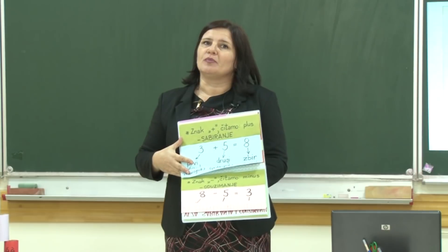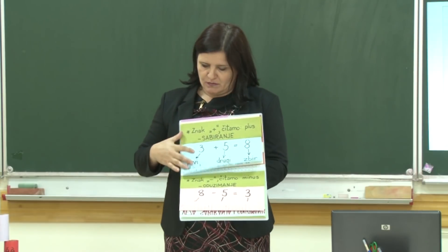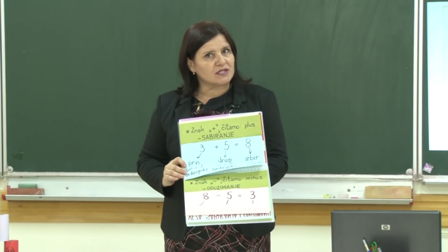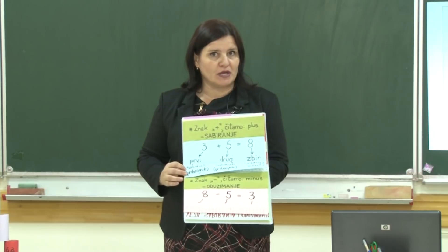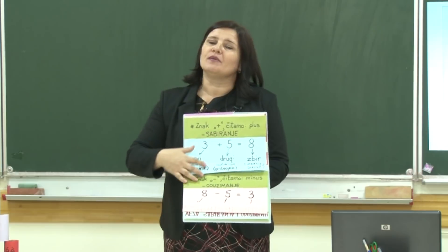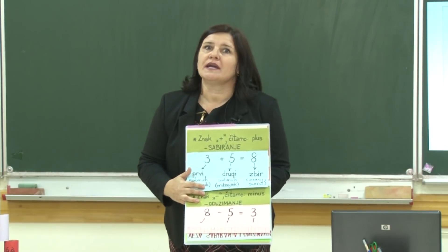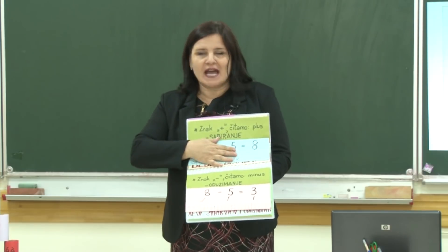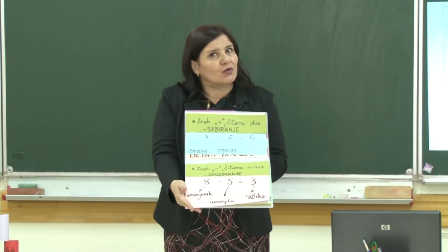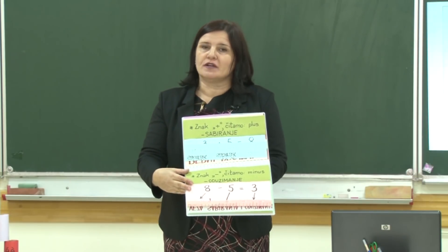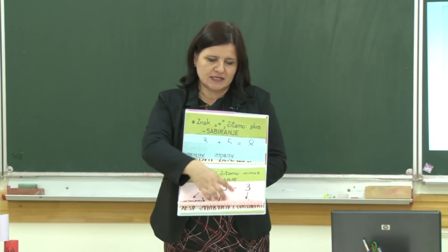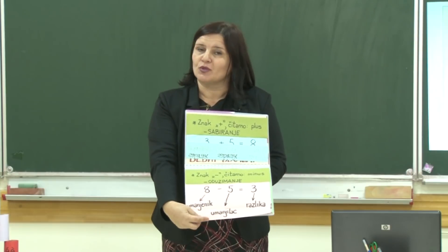Potom smo došli do nekih računskih operacija. Kad imamo znak plus — računska operacija sabiranja. Prvi broj kod sabiranja zovemo sabirak ili pribrojnik, drugi broj kod sabiranja zovemo sabirak ili pribrojnik, a broj koji dobijemo sabiranjem je zbir, suma ili zbroj. Radili smo i računsku operaciju oduzimanja. Kako zovemo brojeve kod oduzimanja? Prvi broj umanjenik, drugi umanjilac, i onaj broj koji dobijemo oduzimanjem je razlika.